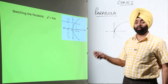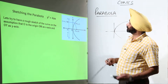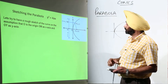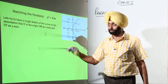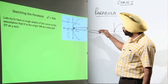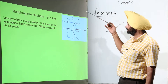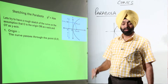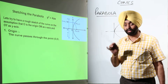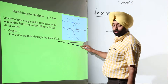Let us try a rough sketch of the curve on the assumption that O is the origin, OM as the x-axis and OY as the y-axis. OM means this part as the x-axis and OY this as the y-axis. This is the assumption made by us. Now, where will the origin be? We have already discussed that the origin is the vertex at (0, 0). So the curve passes through the point (0, 0).